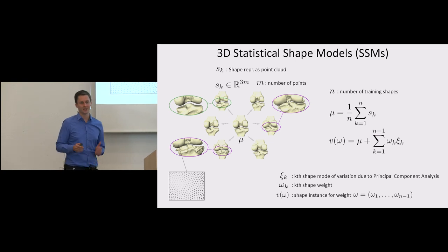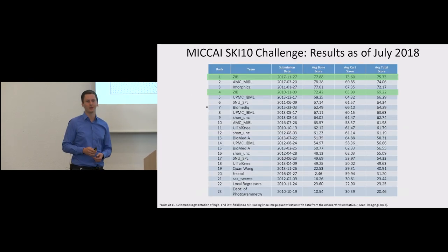The main idea of statistical shape models SSM is to capture the geometrical variability within a certain population of shapes or in the medical context of anatomies. A shape is represented as a point cloud and all shapes in our population have pointwise correspondence. The mean shape is given as the arithmetic mean of all shapes. Using principal component analysis between the differences of all points and the mean, shape modes of variation xi are calculated. Finally, a shape instance is given as the mean plus a linear combination of shape weights and the shape modes of variation.